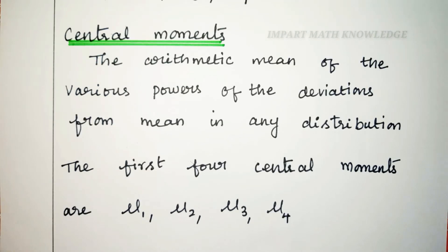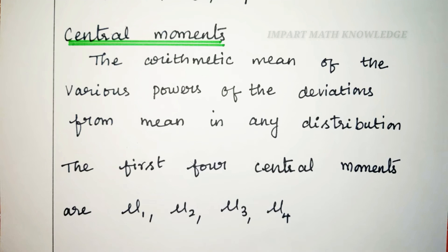Central moments are the arithmetic mean of the various powers of the deviations from mean in any distribution. The first four central moments are mu1, mu2, mu3, and mu4.